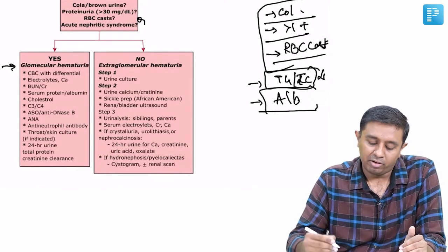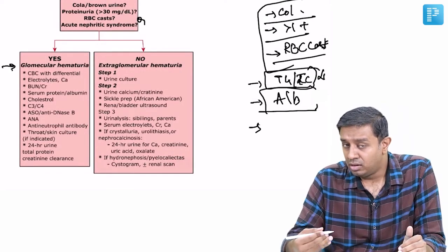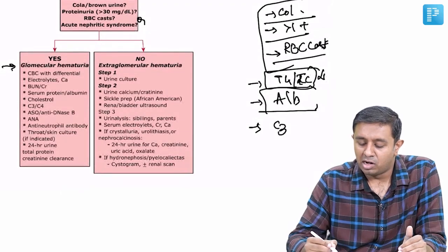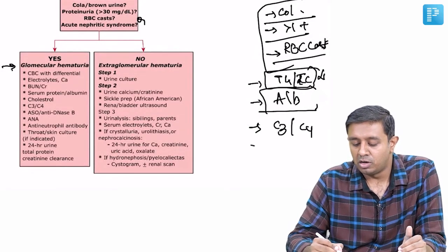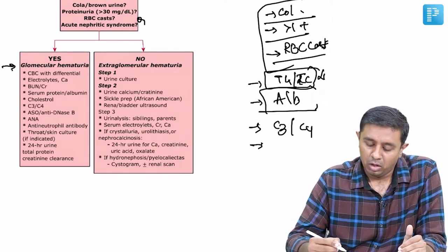When you're thinking of nephrotic picture or when the presentation contains significant RBCs, we would like to rule out complement-related disorders. That is C3 and C4 should be done. PSGN may not always be apparent by the history, so never rule out PSGN without doing this set of investigations.